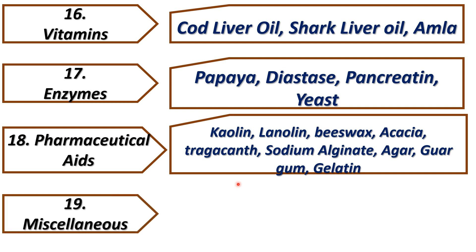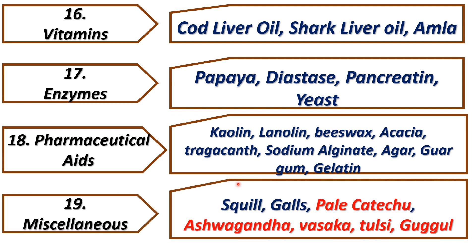The last subcategory of chapter five is miscellaneous — drugs which have different activities not related to the previous subcategories. These include squill, gaule, pale catechu, ashwagandha, vasaka, tulsi, and gugul.